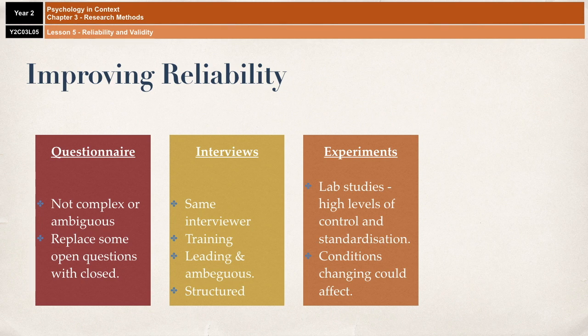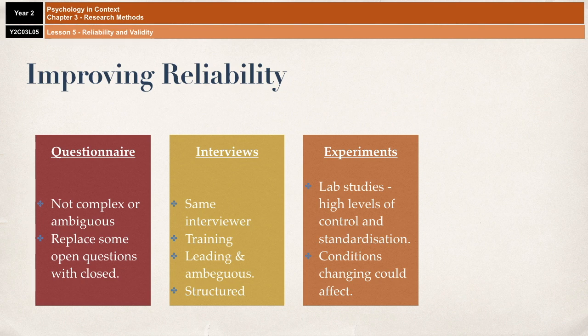If you are conducting an experiment, then lab studies are the way to go. Lab studies are very often described as being reliable because the researcher can exert strict controls over many aspects of the procedure, such as the instructions that the participants receive and the conditions in which they're tested. It is much easier to achieve that level of control in a lab experiment than in a field study, and having that level of control can increase reliability, because one thing that might affect reliability is if participants are tested under slightly different conditions each time. Having the conditions nice and strict means conditions will always stay the same, which improves reliability.